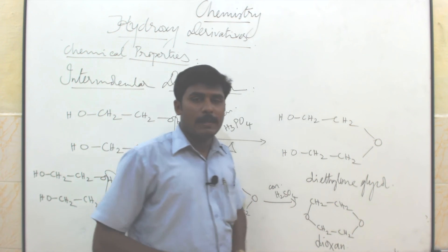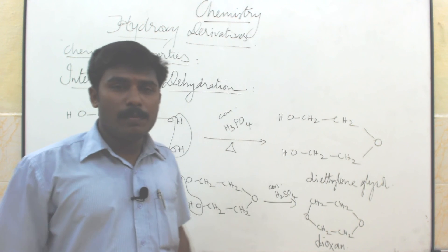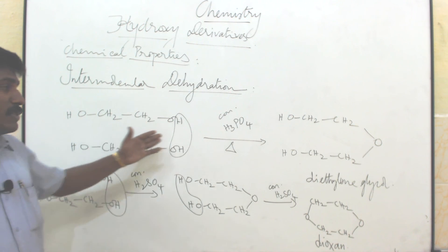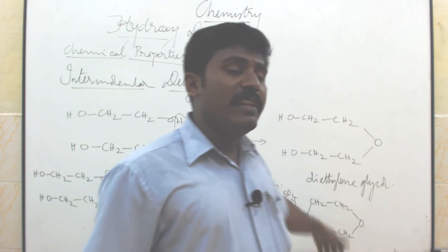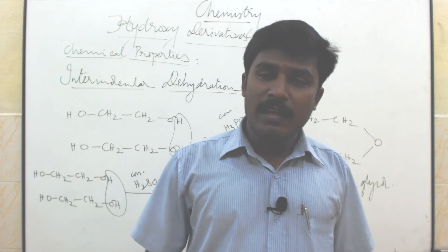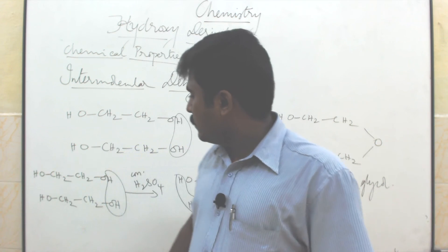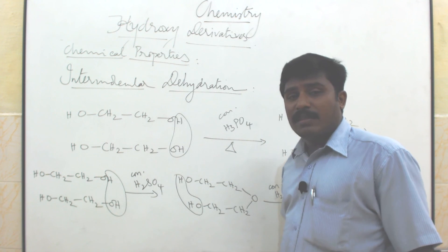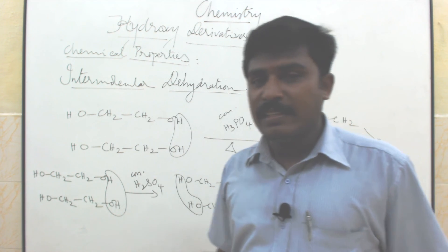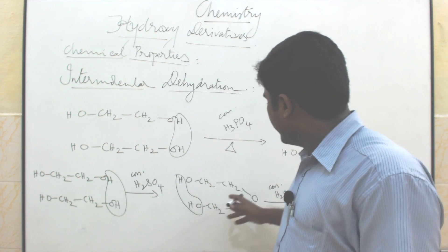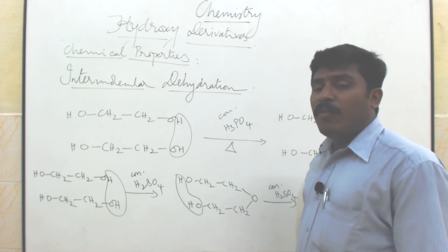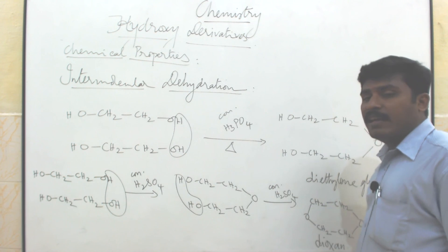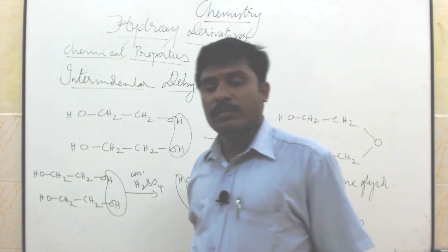This reaction is very important for the problem part. First, two molecules of ethylene glycol react with concentrated sulfuric acid — the best dehydrating agent — to give a linear diethylene glycol. Then adding concentrated sulfuric acid again gives the cyclic compound dioxane.